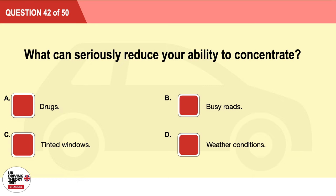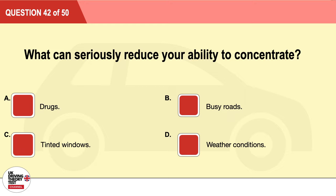Question 42: What can seriously reduce your ability to concentrate? A: Drugs. B: Busy roads. C: Tinted windows. D: Weather conditions. The correct answer is A: drugs.